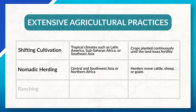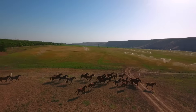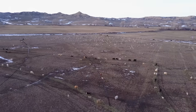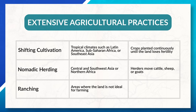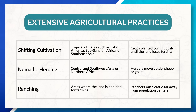Lastly, there is ranching, which is typically located in areas where the land is not ideal for farming. This often means that land is less expensive, which is important since ranching takes up a lot of land. This type of extensive agriculture is also located farther away from population centers, since land is cheaper the farther away you are from an urban area. All of this allows ranchers to maximize their profits and reduce their costs.